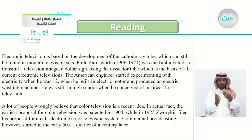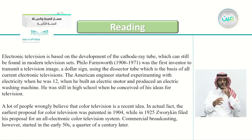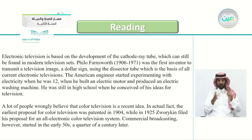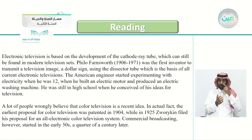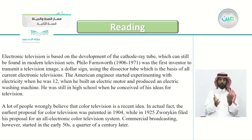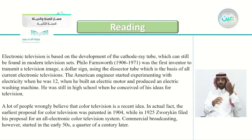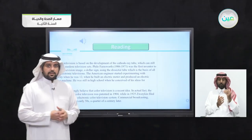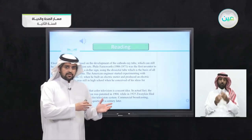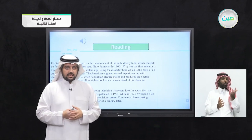He was still in high school when he conceived of his ideas for television. A lot of people wrongly believe that color television is a recent idea. In actual fact, the earliest proposal for color television was patented in 1904, while in 1925 Zworykin filed his proposal for an all-electronic color television system. Commercial broadcasting, however, started in the early 1950s — a quarter of a century later.